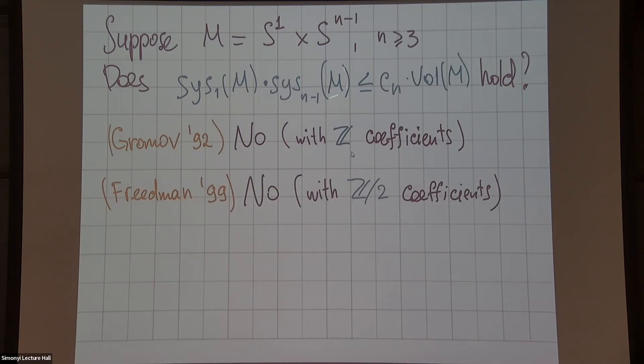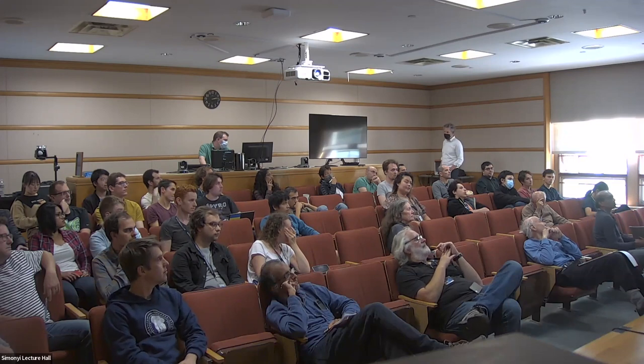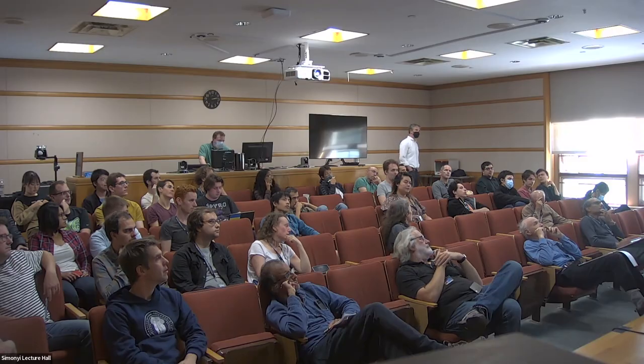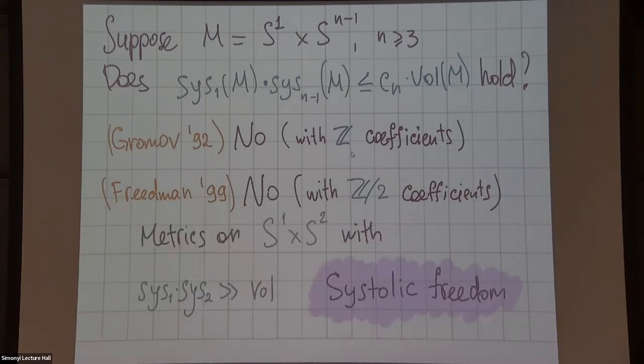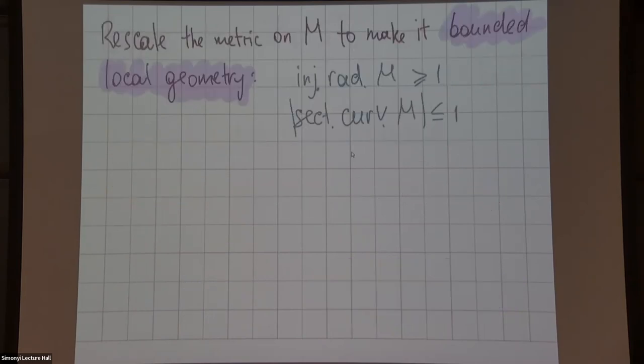The first systole will be like log g, where g is the genus of the surface. But you cannot bound the product in terms of the volume, or you can but not just by a constant times volume. He came up with metrics on S1 cross S2 with a huge systolic product, much bigger than the volume, and this is called systolic freedom.